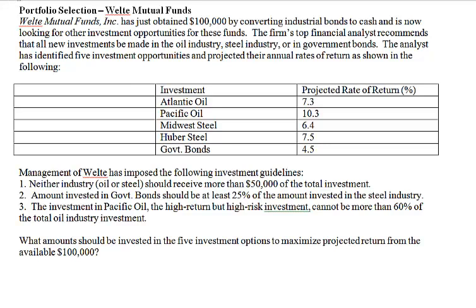The potential for high return tends to be accompanied by high risk. So you want to also put some money into low return but low risk places as well, like the government bonds. Government bonds have the lowest rate of return out of the five, but it is the safest place to put your money. Basically, you don't want to put all your eggs into one basket — you want to diversify.